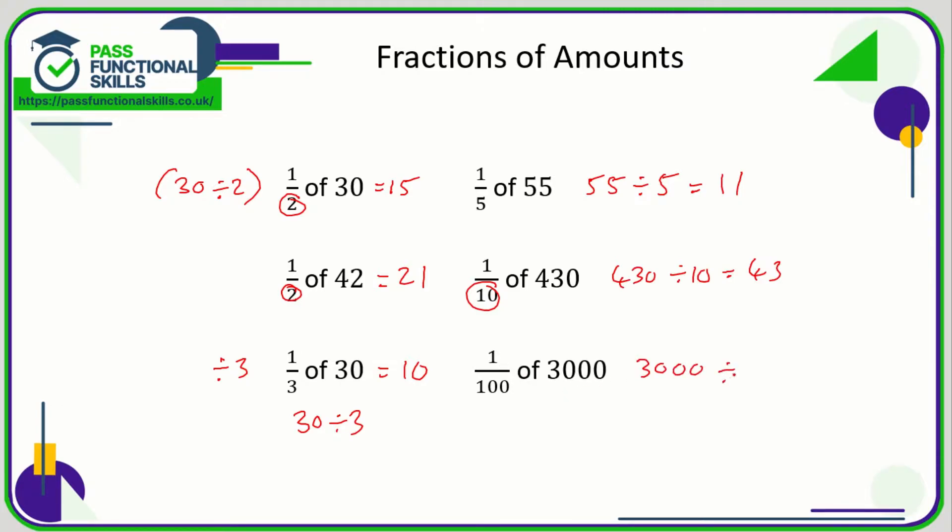1/100 of an amount means we're dividing the amount by 100, and if the number in question has got two zeros on the end then we can just chop off two zeros, so the answer is 30. So for all the questions on this slide, all we've done is we've divided the total by the number on the bottom: 2, 3, 5, 10, and 100. And that works for 1/5, 1/7, any fraction.